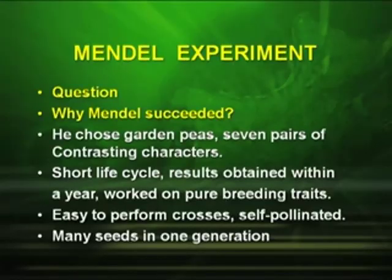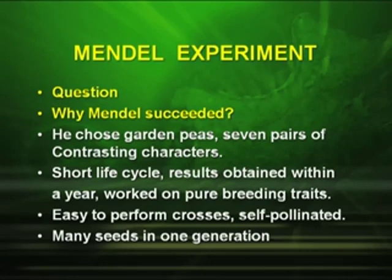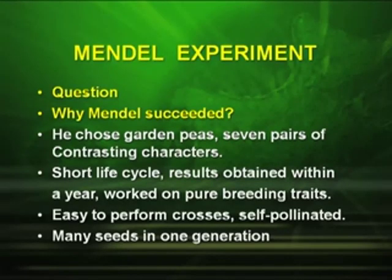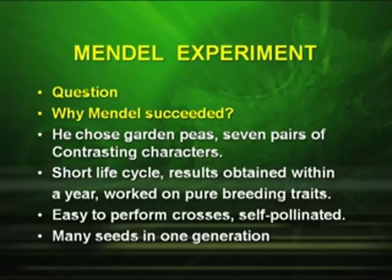Now, let us study the Mendel experiment. The very first question that arises is: why did Mendel succeed? The first very important reason is he chose garden pea, which has seven pairs of contrasting characters. Second, it has a short life cycle — results obtained within a year — and he worked on pure breeding traits. Third, it is easy to perform crosses in garden pea, because it is a self-pollinated plant.